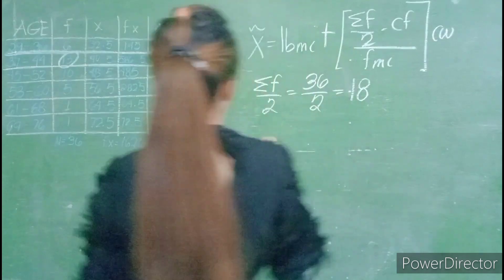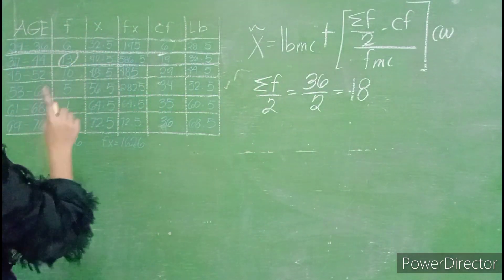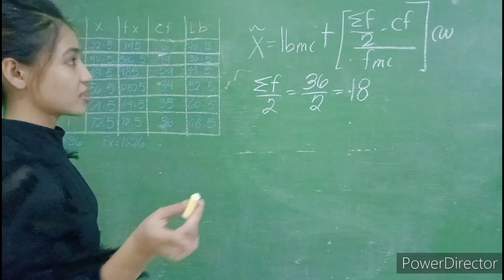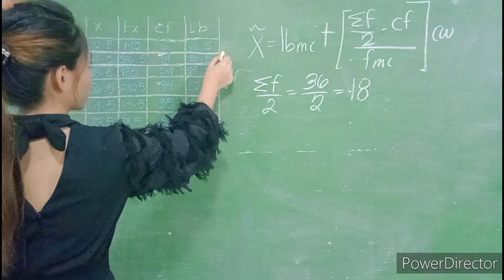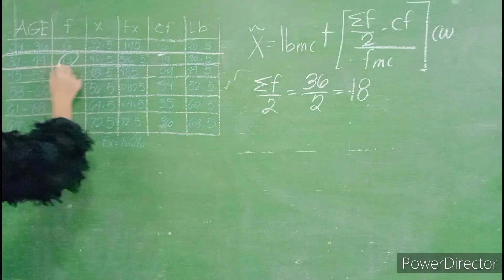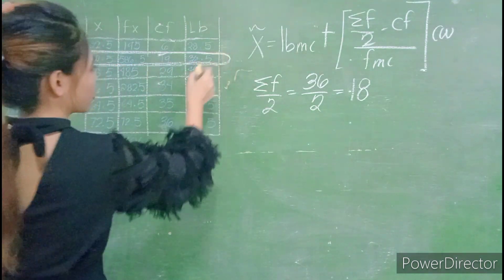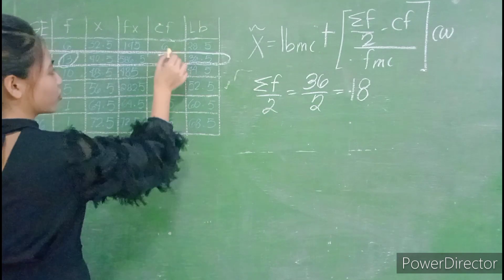So that we can see what is our lower boundary and cumulative frequencies. And here, we are in this second row which is where 18 belongs to the 19.